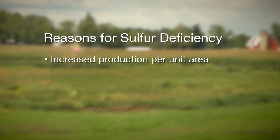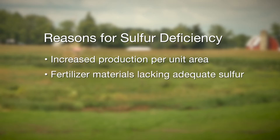There are three basic reasons that we think of when we talk about why there are sulfur deficiencies. First, we've increased our production per unit area, and with that we've created a demand for all plant nutrients, and sulfur certainly is no exception. We also need to consider what materials are being used for fertilization — urea, diammonium phosphate — contains very little, if any, sulfur, so we're not making the applications we used to.